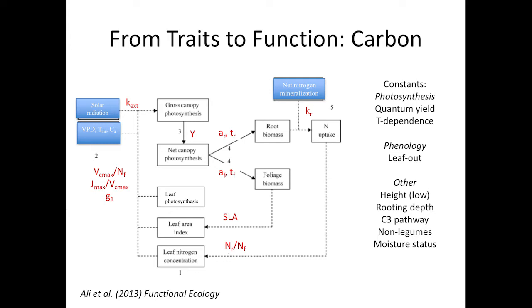How do we get from traits to ecosystem function? My first example is the carbon side, from a paper a couple of years old. We were looking at the CO2 response of grassland species driven by Peter's Biakon experiment. We had a simple model with inputs of climate and soil nitrogen availability, simulating photosynthesis, NPP, root and leaf biomass, nitrogen uptake, leaf area index, and nitrogen concentration. The different species were represented by their parameters, which we also called traits.